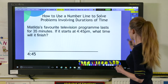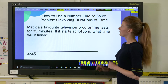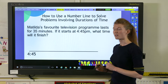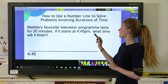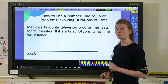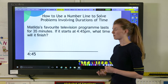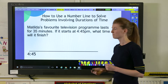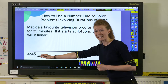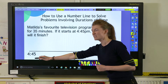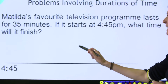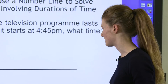So in this problem we can see that Matilda's favourite show lasts for 35 minutes. We know that the start time is 4:45 but we need to find out when it finishes. Children need to place the start time at the beginning of their number line and we're then going to find jumps to see how much later the show ends.